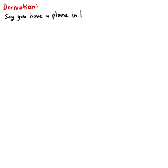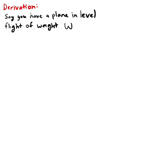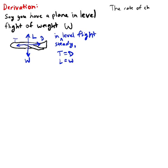So first, let's say you have an airplane in level flight of weight W. So as you remember, this is when all the forces are balanced, thrust equals drag, lift equals weight.